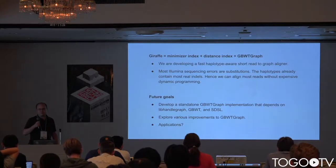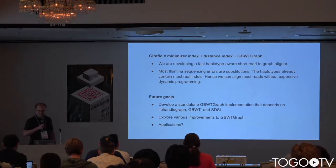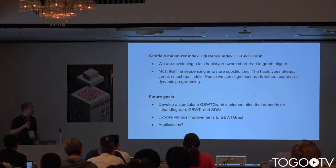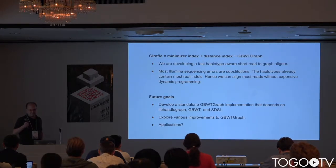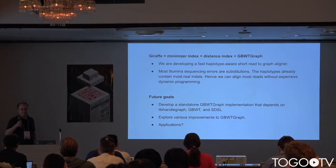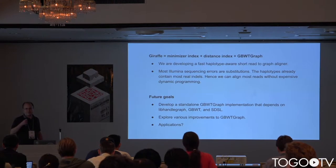This would speed up alignment very much because we don't have to use dynamic programming almost ever. At this point it's about as fast as BWA-MEM, which means it's several times faster than VGMAP. This started as a byproduct because it made developing a graph representation based on the GBWT easier to work with. So in the future, maybe this week, I'm going to develop a standalone GBWT graph implementation that doesn't require the entire VG. The dependencies are basically lib-handle graph for the interface, GBWT for the implementation, and SDSL for low-level data structures.